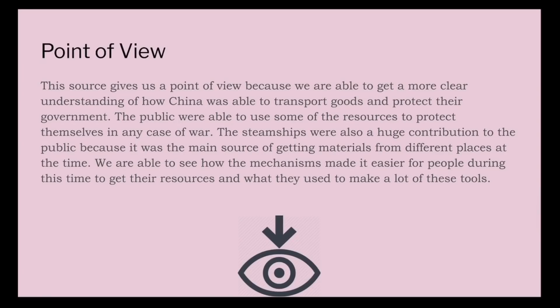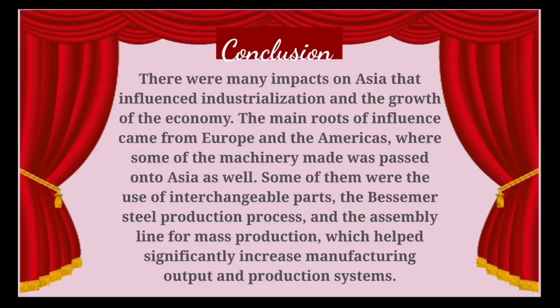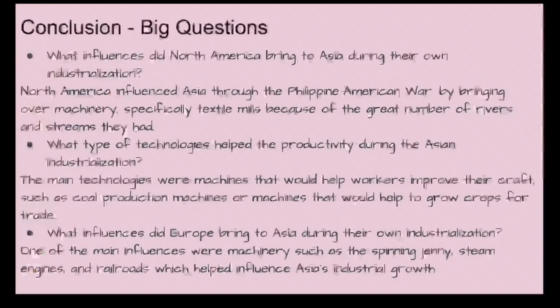In conclusion, there were many impacts on Asia that influenced industrialization and the growth of the economy. The main roots of influence came from Europe and the Americas, where machinery was passed on to Asia — including the use of interchangeable parts, the Bessemer steel production process, and the assembly line for mass production, which significantly increased manufacturing output and production systems.